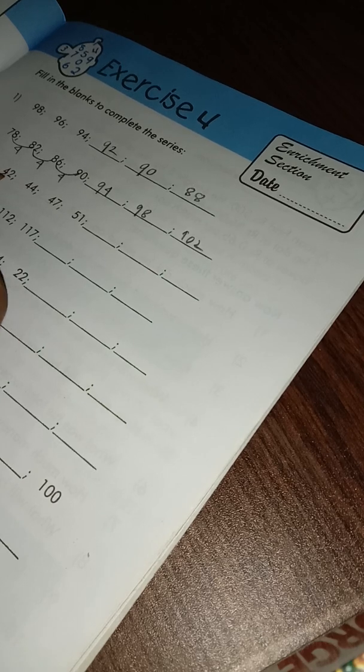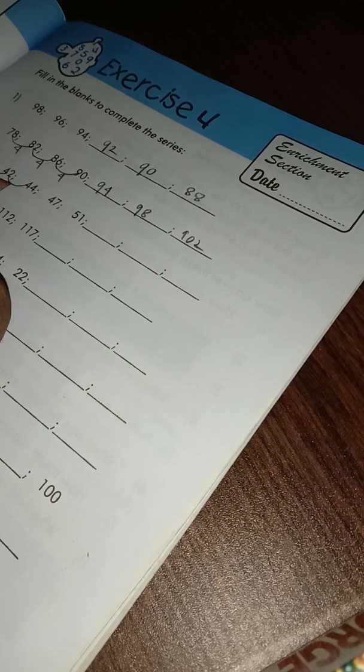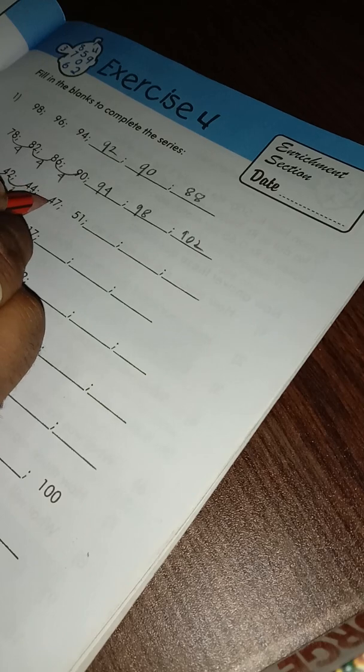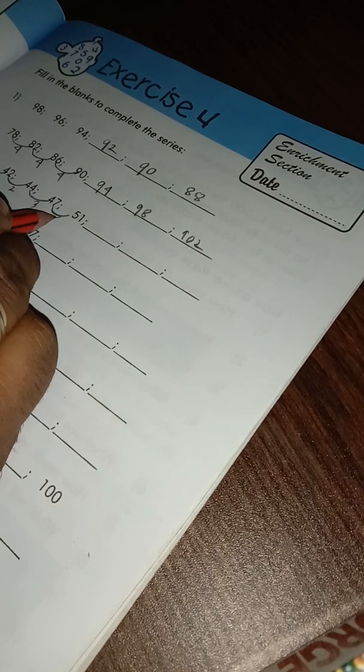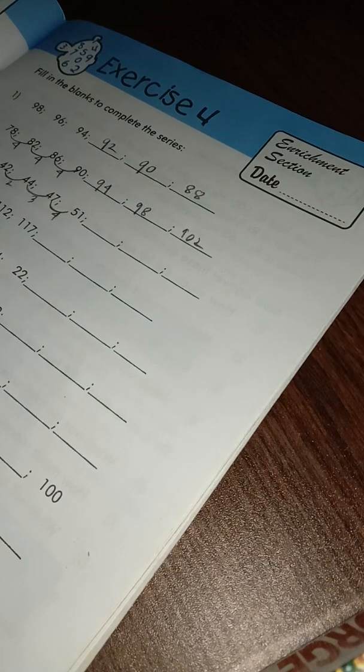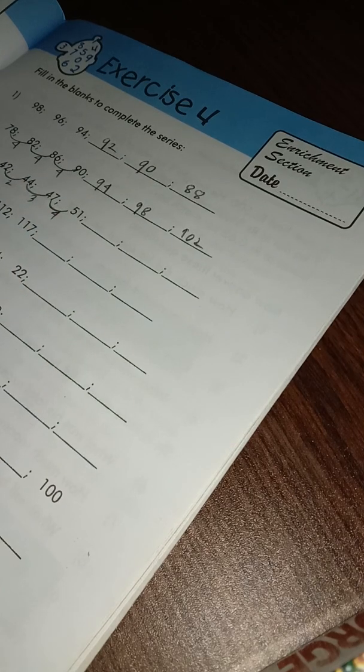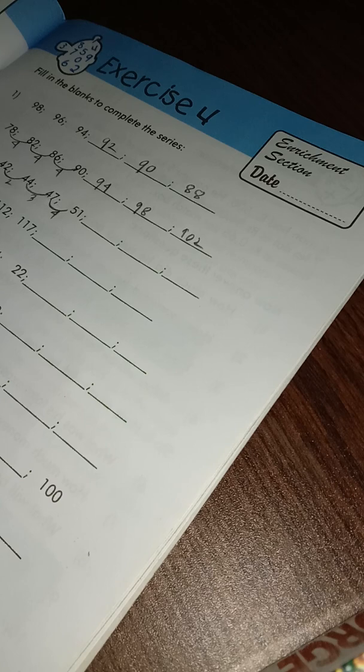So here increasing the difference plus 1, increasing the difference plus one more. So 51 plus 5, here is difference 4, so 51 plus 5 is 56.